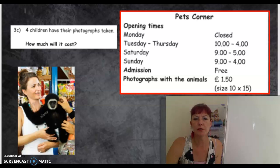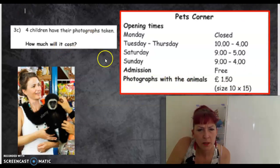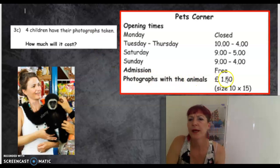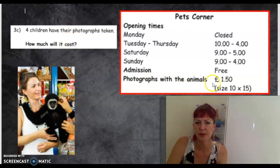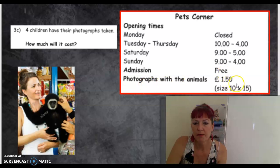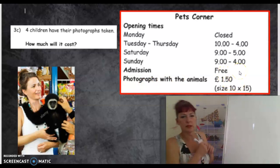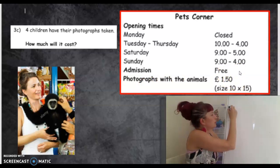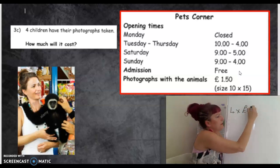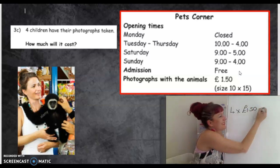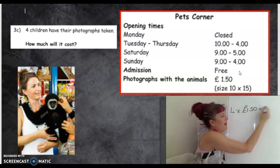How much will it cost? I'm going to look at my rectangle. Photographs with the animals — it doesn't say they're having their pictures taken with the animals, but that's the only price I've got on there: £1.50. So let's work that out. 4 times £1.50 equals £6.